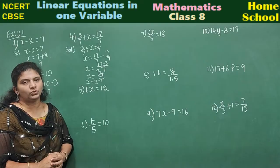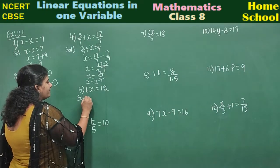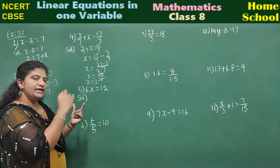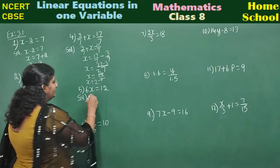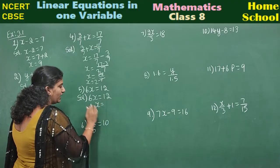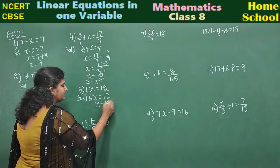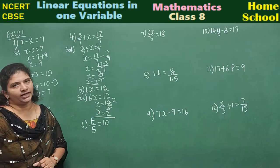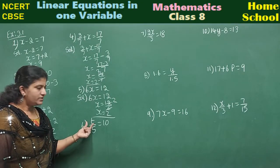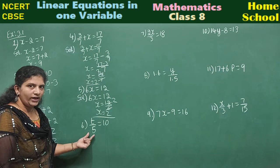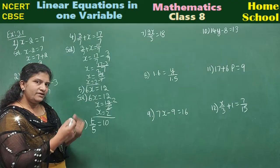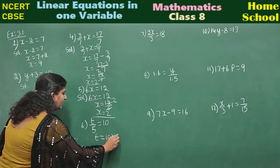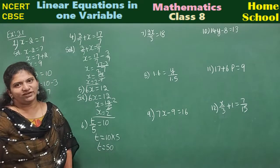Fifth: 6x equal to 12. There is a numerical coefficient 6 multiplied with the variable. Transpose 6 to the other side — it divides: x equals 12 divided by 6, which is 2. Sixth: t/5 equal to 10. Variable is t; 5 is dividing. Transpose 5 to the other side — it multiplies: t equals 10 into 5, which is 50.